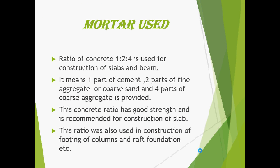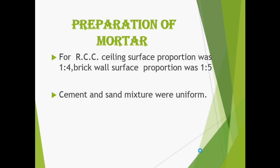The concrete ratio of 1:2:4 was used for the construction of beams and slab, because this ratio has good strength and is recommended for slab construction. For RCC ceiling surface, the proportion was 1:4, and for brick wall surface the proportion was 1:5.